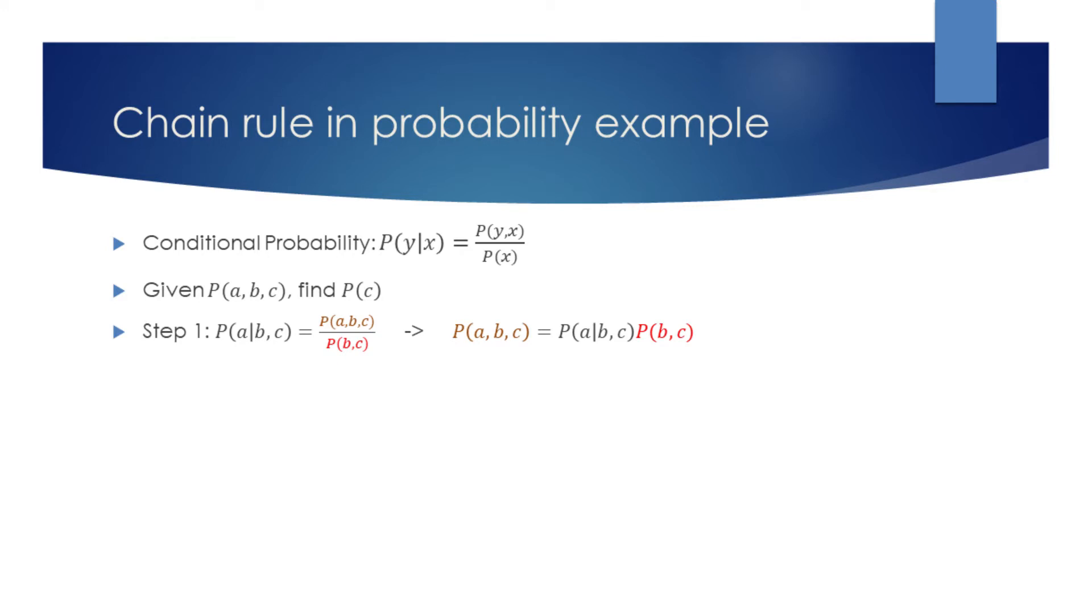Now, we need to express the joint probability of B and C as a conditional probability of B. We can accomplish this by performing the exact same steps as in the previous step.